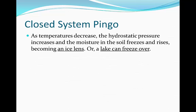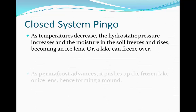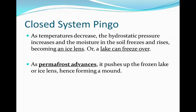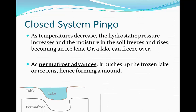Closed system pingoes are slightly different. As temperatures decrease again, hydrostatic pressure is increasing on the moisture and the soil will freeze and rise. It then becomes an ice lens. Or a lake can also freeze over. As the permafrost advances it's going to push up the frozen lake or the ice lens, hence forming a mound.